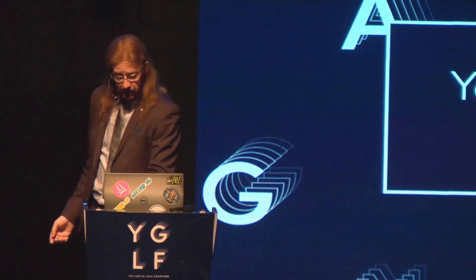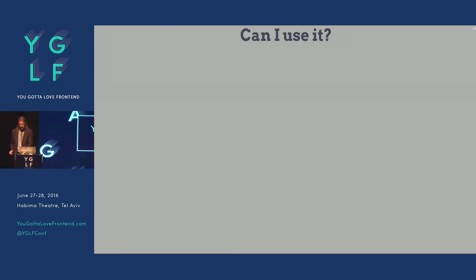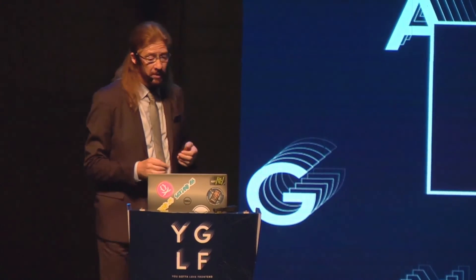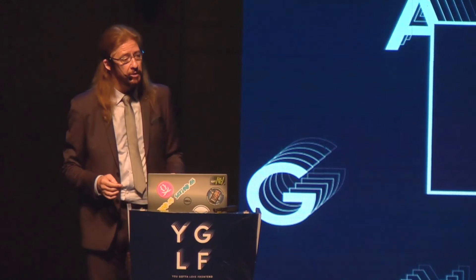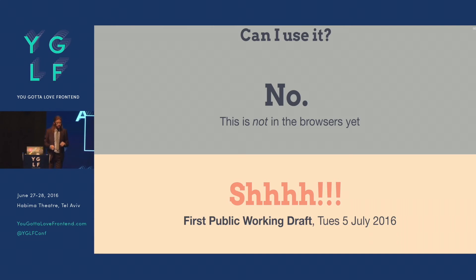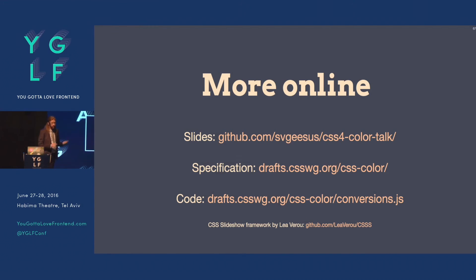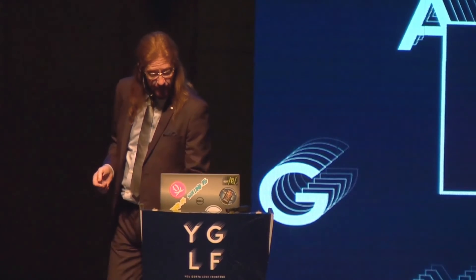Can I use it? No, not yet, actually. This is brand new — it's not in the browsers yet. It was only agreed in San Francisco about two months ago at the CSS working group meeting. The first public working draft is published next Tuesday, so you've got kind of a scoop here. When you look at the draft, you'll see the syntax — LCH parentheses numbers — and now you know why that's relevant and important. The slides are on GitHub, the specification is on the CSS working group site, and there's also some color conversion code I wrote if you want to poke around. Thank you very much.